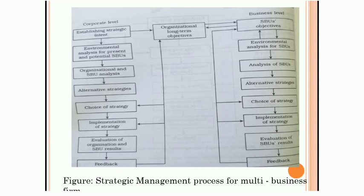On the right-hand side is the strategic management process for individual business units — the various SBUs. In the case of Tata Group, the SBUs include Tata Motors, Tata Consultancy Services, Tata Tea, Tata Chemicals, and others. This process is followed by each strategic business unit.